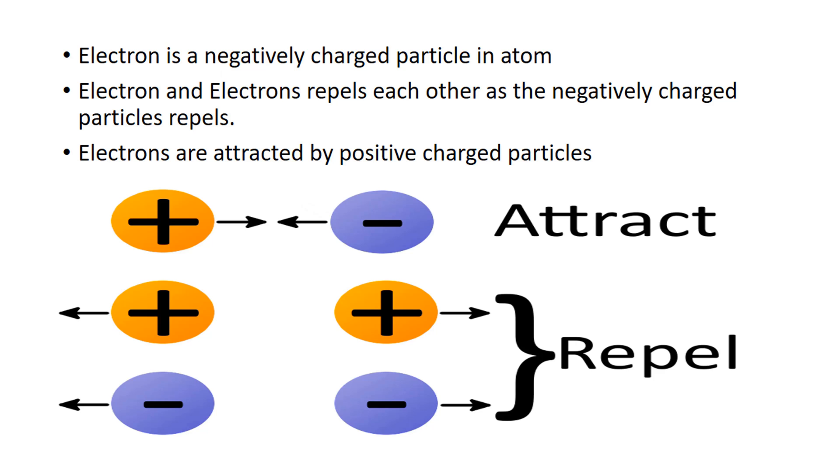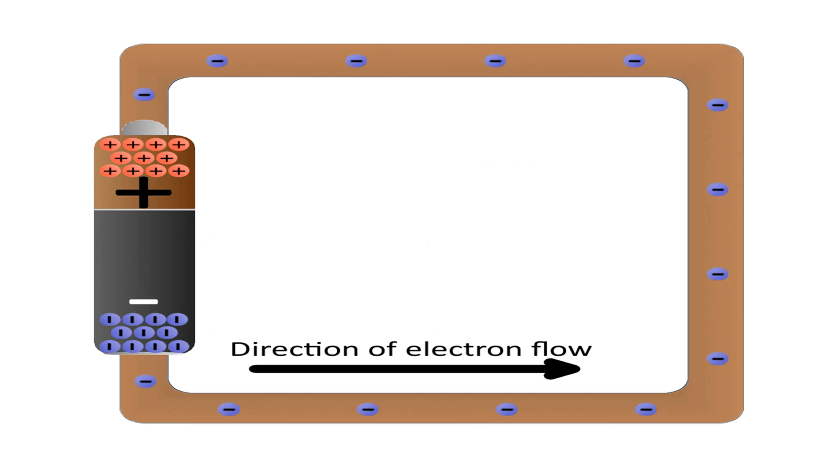Since electrons are negatively charged particles, they are repelled by negative charges. This means same charges repel each other and opposite charges attract each other. Let us consider a circuit. The electrons flow from negative to the positive direction since the negative terminal